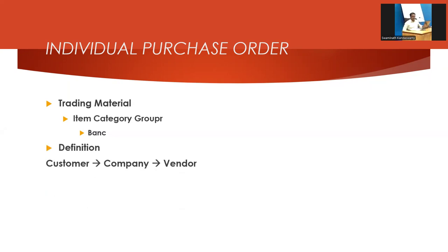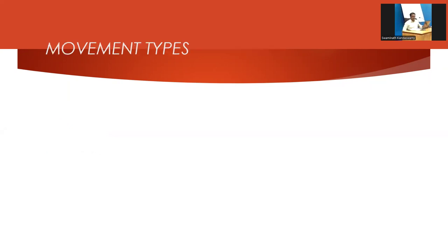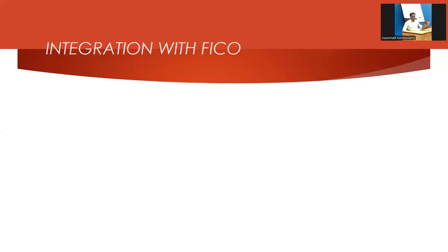The customer gives the order, the company gives the order to the vendor, the vendor supplies the material, and the company in turn supplies the material to the customer. They may ask you the movement type: for goods receipt it is 101, for goods issue it is 601. Now, the integration with FICO — MM, SD, FICO — all three are getting integrated. Let's go directly into the system.